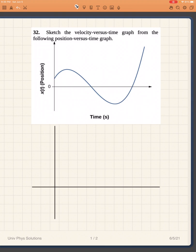Hello, we're going to be working on problem 32 from University of Physics by OpenStax. Sketch the velocity versus time graph from the following position versus time graph. As you probably already know, your velocity is equal to the slope of your position versus time graph. That's because when you look at the rate of change of X divided by the rate of change of time, that is equal to speed.